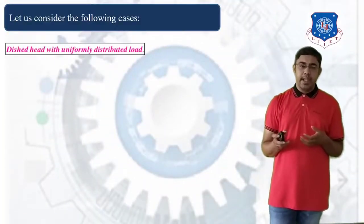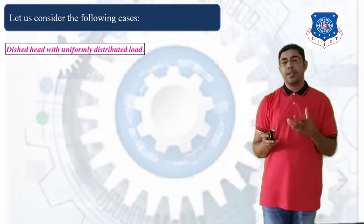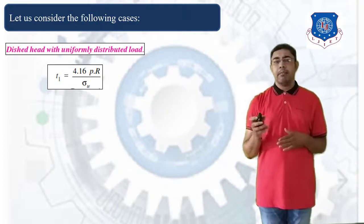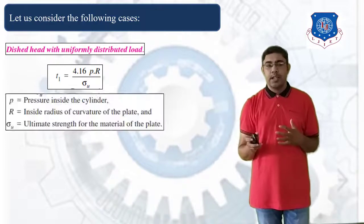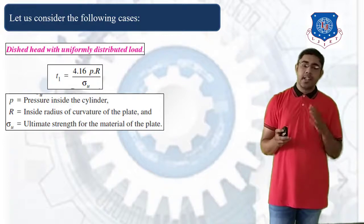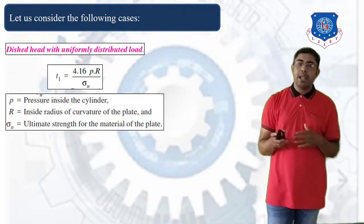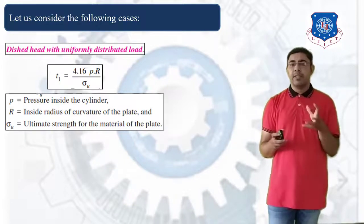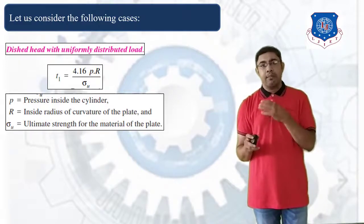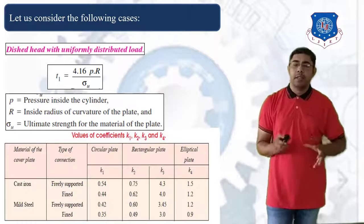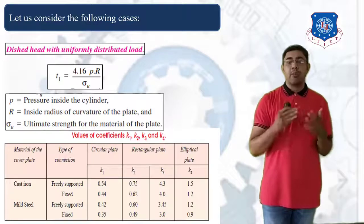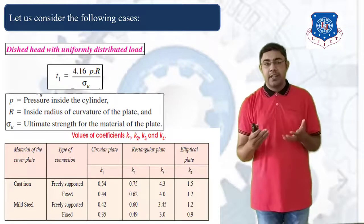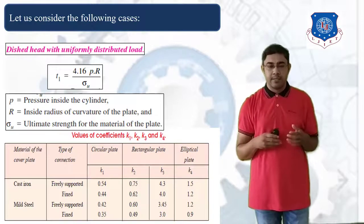The next case is a dished head with uniform distributed load. In this case, T1 = 0.16 × P × R / σU, where P is the pressure inside the cylinder, R is the inside radius of curvature of the plate, and σU is the ultimate tensile strength of the plate material. Whenever you need the values of factors K1, K2, K3, or K4, use the provided tables. In this lecture, we learned about compound cylindrical cells and the design of end closures according to different geometries. Thank you.